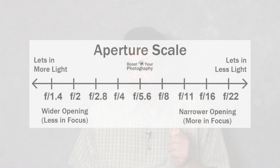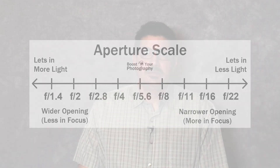The f-stop scale is as follows: F1.4, F2, F2.8, F4, F5.6, F8, F11, F16, and F22. The aperture is the hole in the lens through which light passes through. It controls both the exposure and the depth of field, though we're only looking at the exposure here. If you're changing from F2 to F2.8, you're halving the exposure — cutting it in half. In doing so, you're halving the open area of the aperture lens.